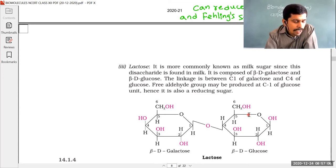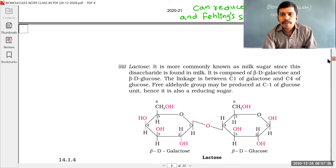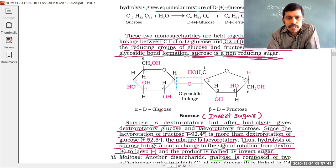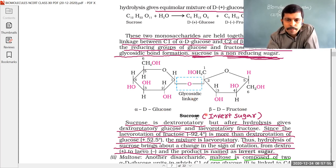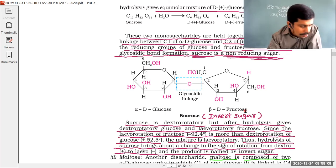Question 19: which set of monosaccharides forms sucrose? In the last video we discussed the formation of sucrose. Sucrose, formula C12H22O11, is formed from alpha-D-glucose and beta-D-fructose with elimination of one water molecule. Alpha-D-glucose forms a glycosidic linkage with beta-D-fructose.